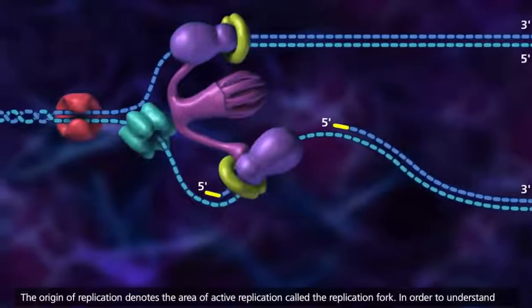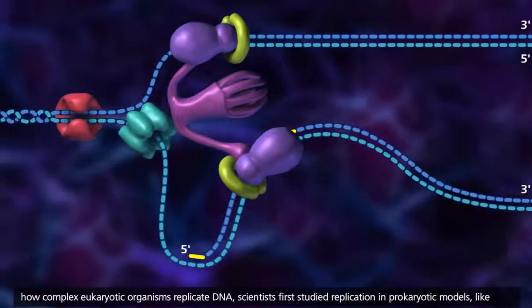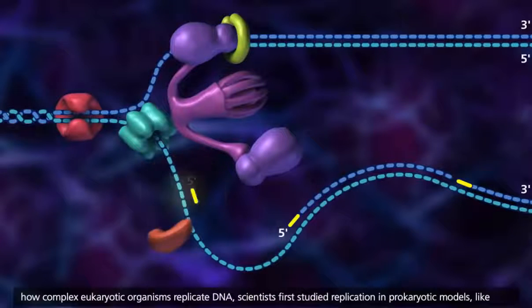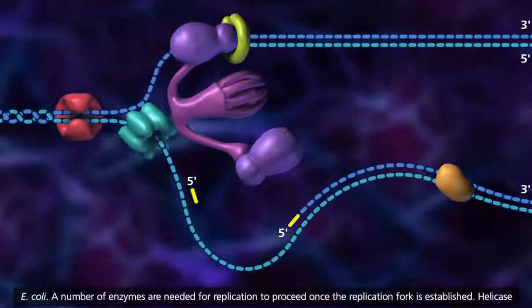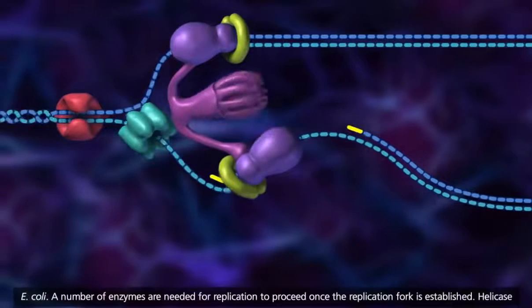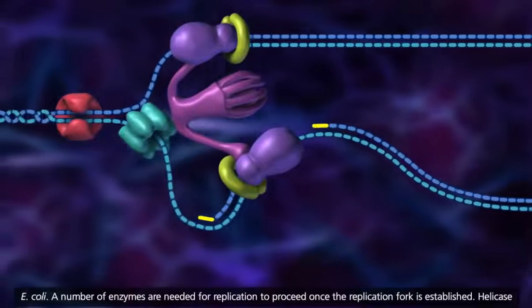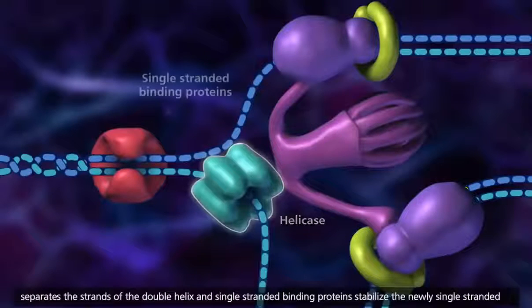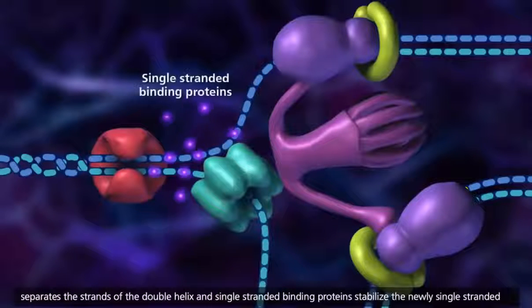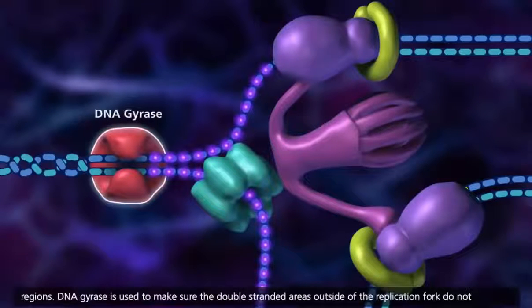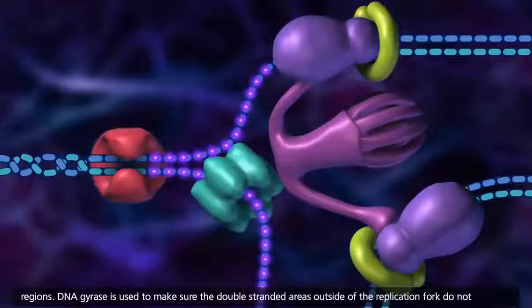In order to understand how complex eukaryotic organisms replicate DNA, scientists first studied replication in prokaryotic models like E. coli. A number of enzymes are needed for replication to proceed once the replication fork is established. Helicase separates the strands of the double helix, and single-stranded binding proteins stabilize the newly single-stranded regions. DNA gyrase is used to make sure the double-stranded areas outside of the replication fork do not supercoil.